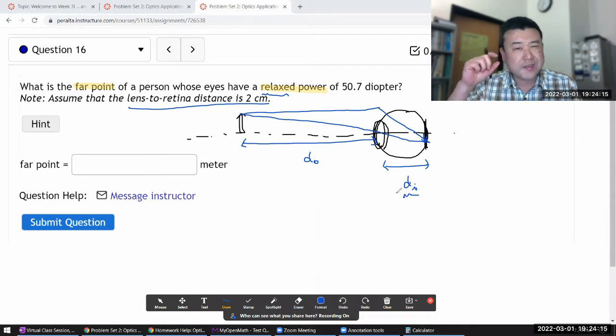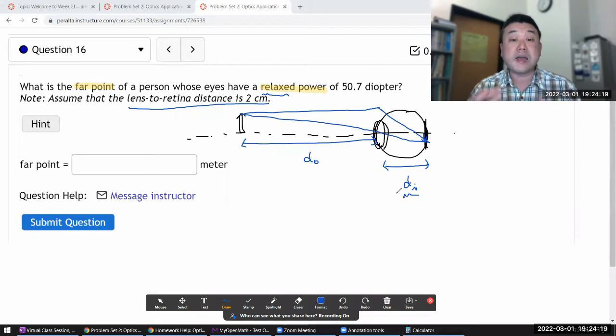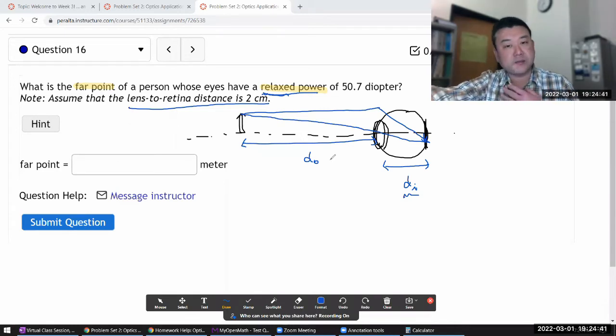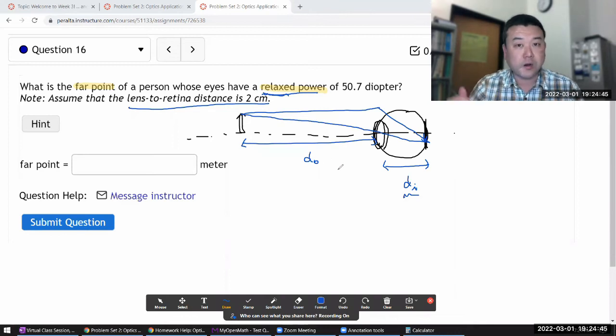When your eye is strained, then your focal length of the lens gets shorter. When the eyes are relaxed, then the focal length of the lens gets longer. So when they are telling you it's a relaxed power, they're telling you the state of the lens of the eye is to put the object distance to the farthest point that this eye can focus on.